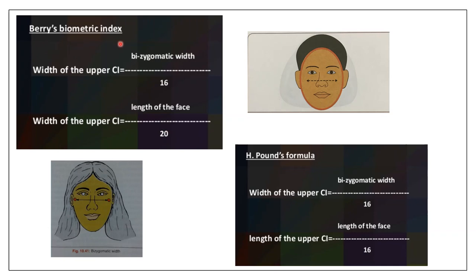Another method is H. Pound's formula, which determines both the width and the length of the upper central incisor. Width is the horizontal measurement and length is the vertical measurement. The formulas are: width = bizygomatic width ÷ 16, and length = length of the face ÷ 16. These are the various anthropological measurements used to determine the size of anterior teeth.